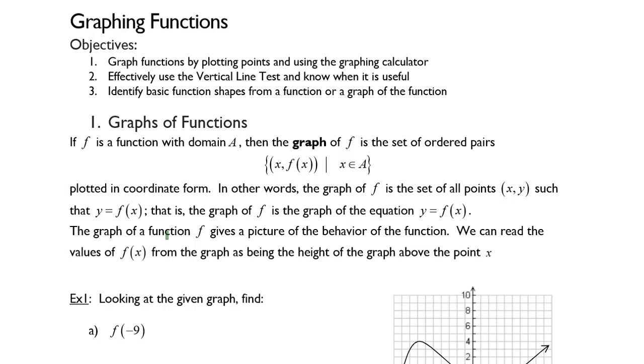The graph of a function f gives a picture of the behavior of the function. We can read the values of f(x) from the graph as being the height of the graph above or below the point x. So the curve can go either above the x-axis or below the x-axis. The x values or the horizontal values will then tell you where the outputs, the range values, exist.